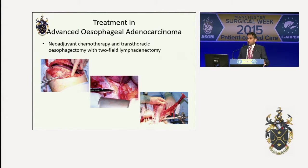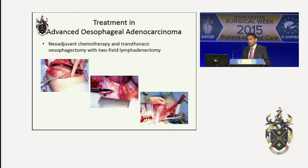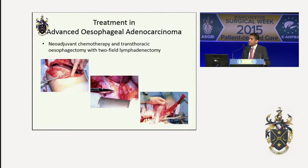Treatment for advanced esophageal adenocarcinoma usually involves neoadjuvant chemotherapy followed by radical surgery with a two-stage esophagectomy and radical two-field lymphadenectomy. Esophagectomy still carries significant morbidity and mortality.